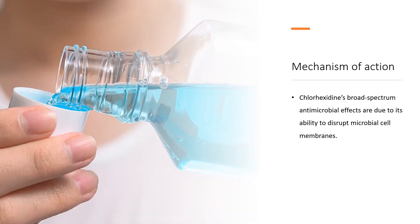Mechanism of Action: Chlorhexidine's broad-spectrum antimicrobial effects are due to its ability to disrupt microbial cell membranes. The positively charged chlorhexidine molecule reacts with negatively charged phosphate groups on microbial cell surfaces. This reaction destroys the integrity of the cell, allowing leakage of intracellular material, and allows chlorhexidine to enter the cell, causing precipitation of cytoplasmic components and ultimately cell death.